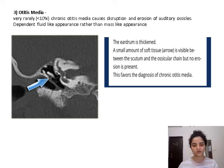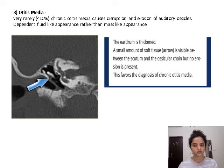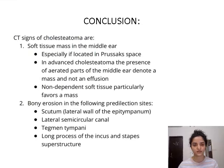In this particular image, we can clearly appreciate that the eardrum is thickened and a small amount of soft tissue is visible between the scutum and the ossicular chain, but no erosions are present. This favors the diagnosis of chronic otitis media.